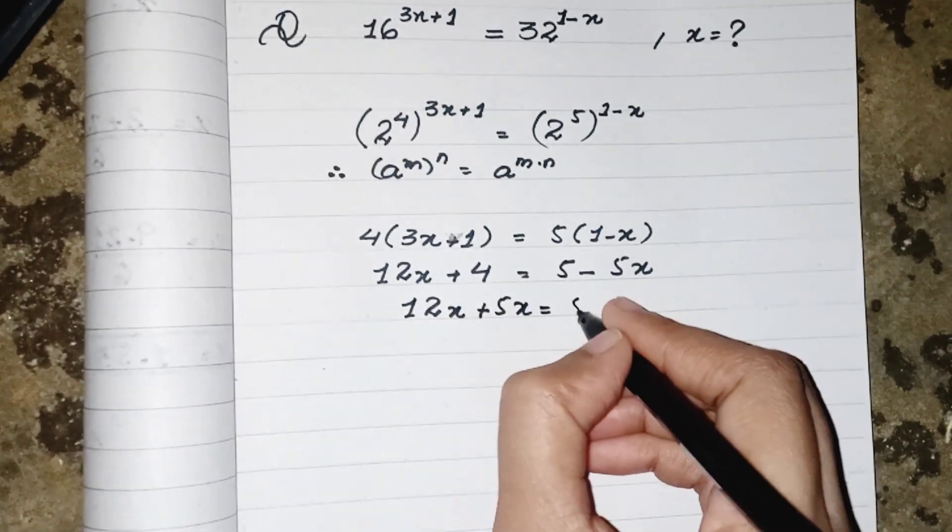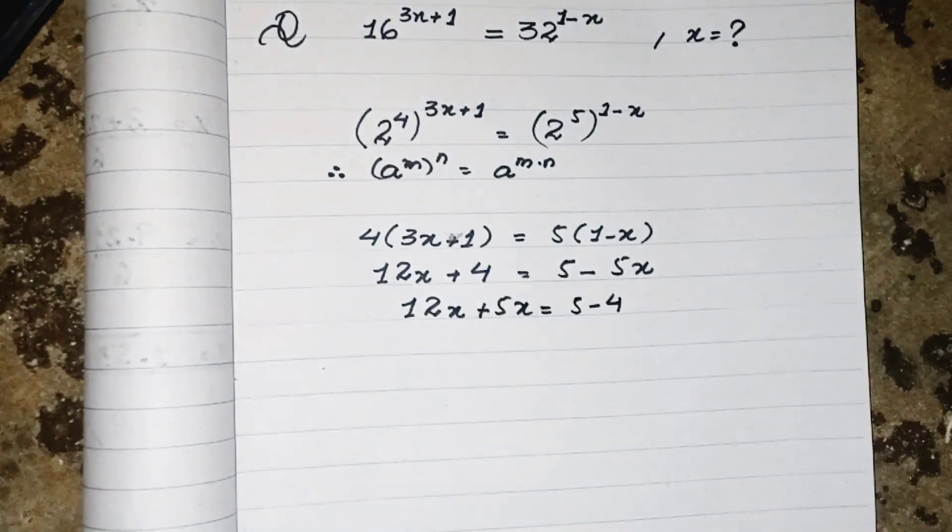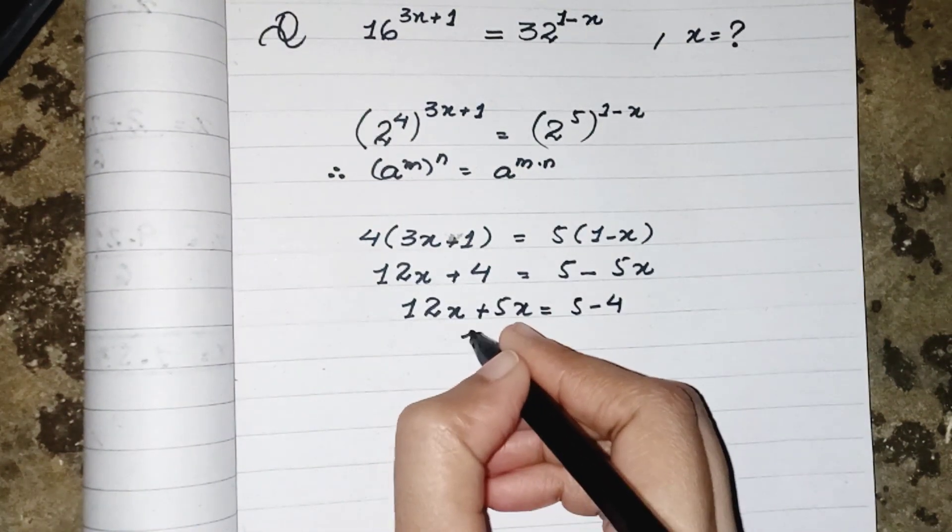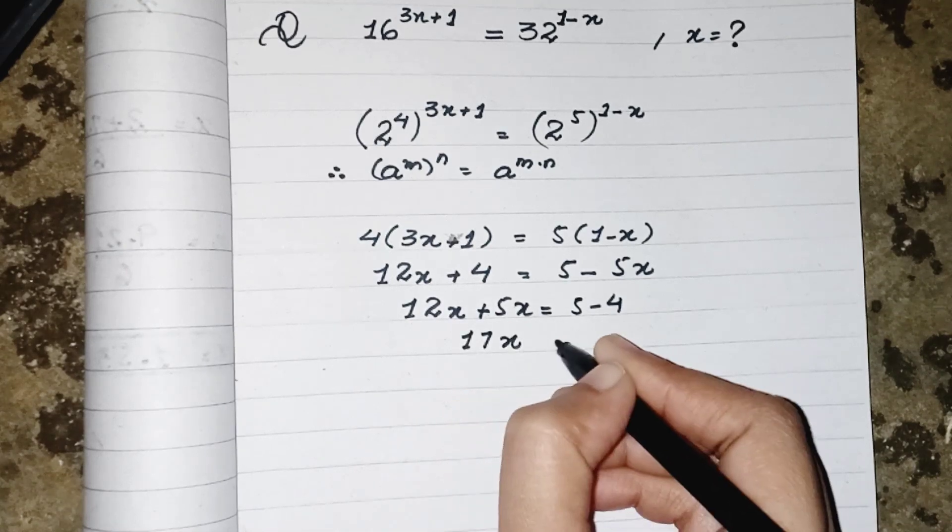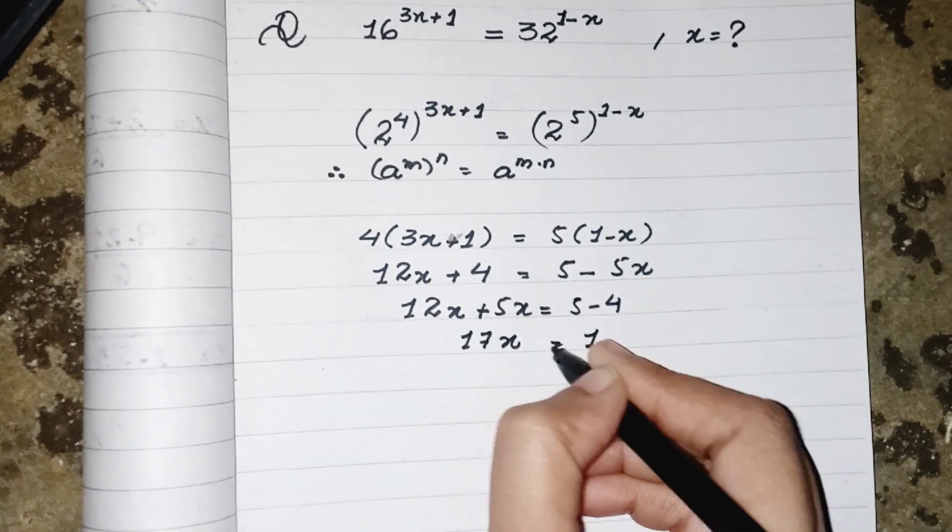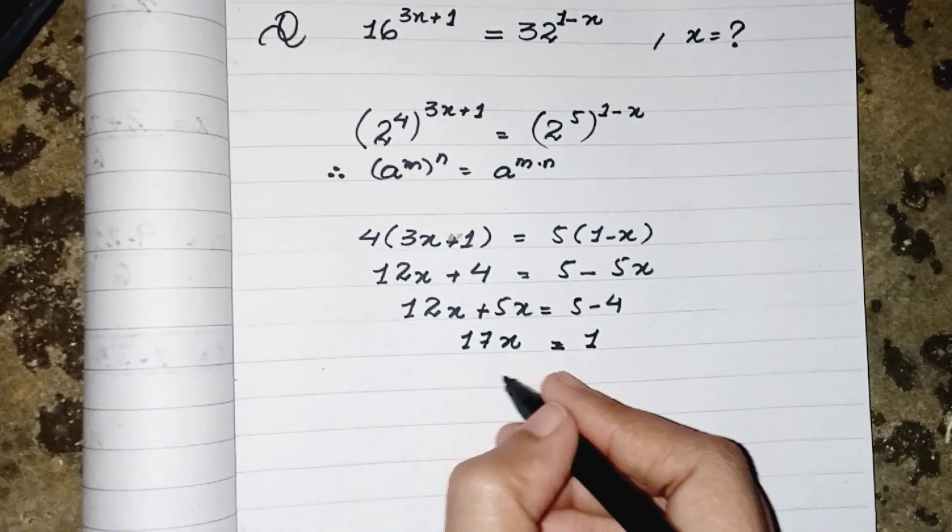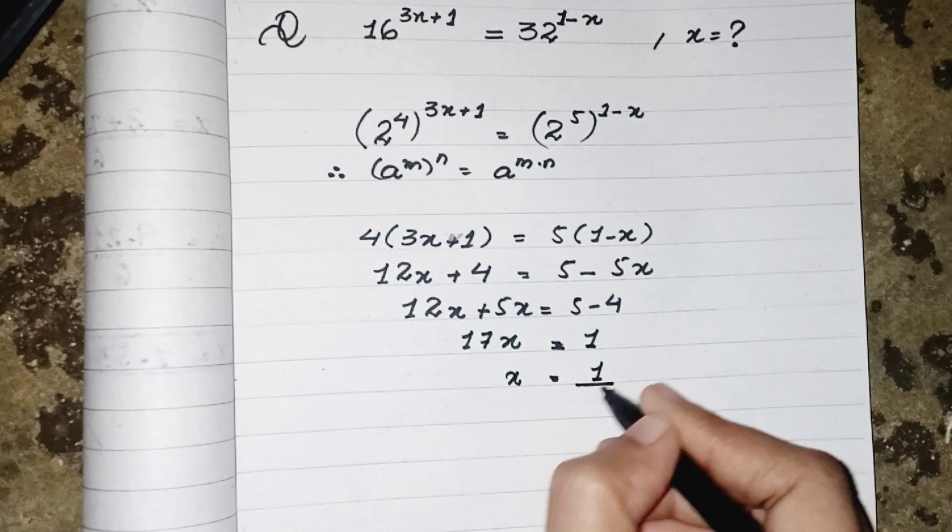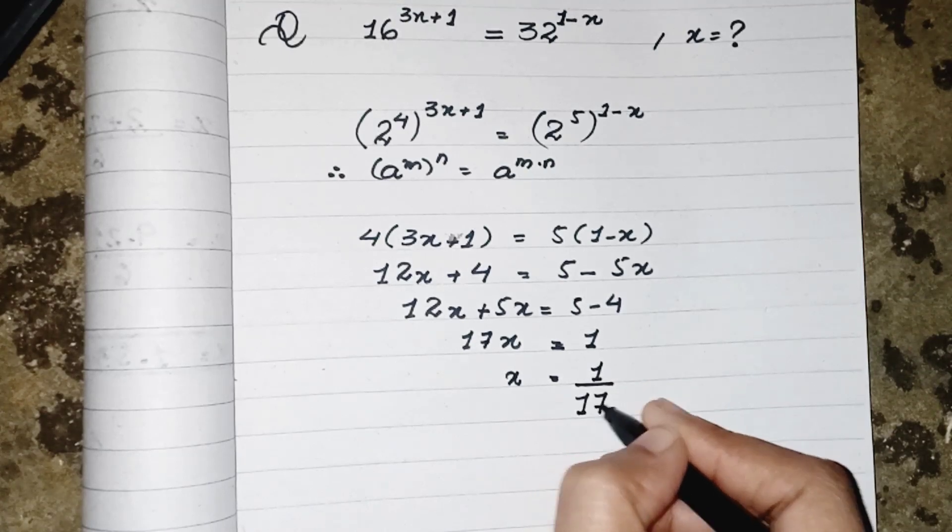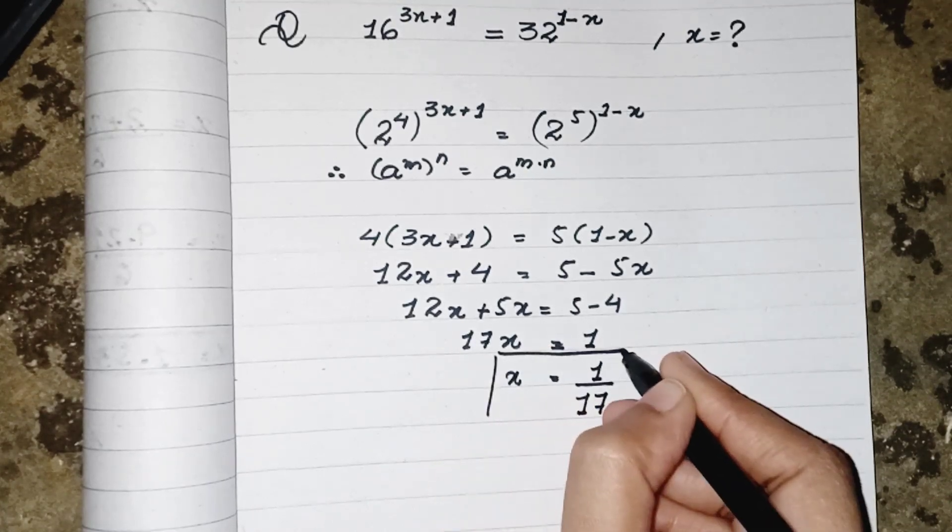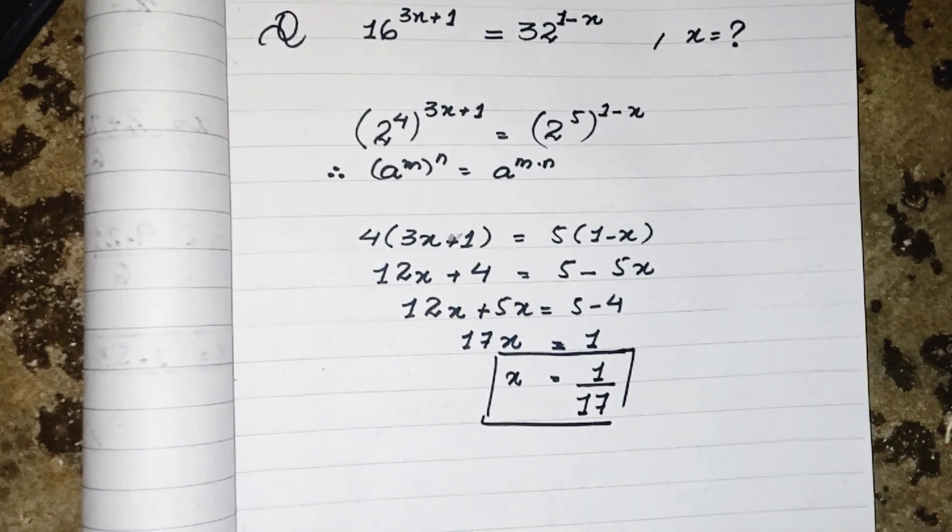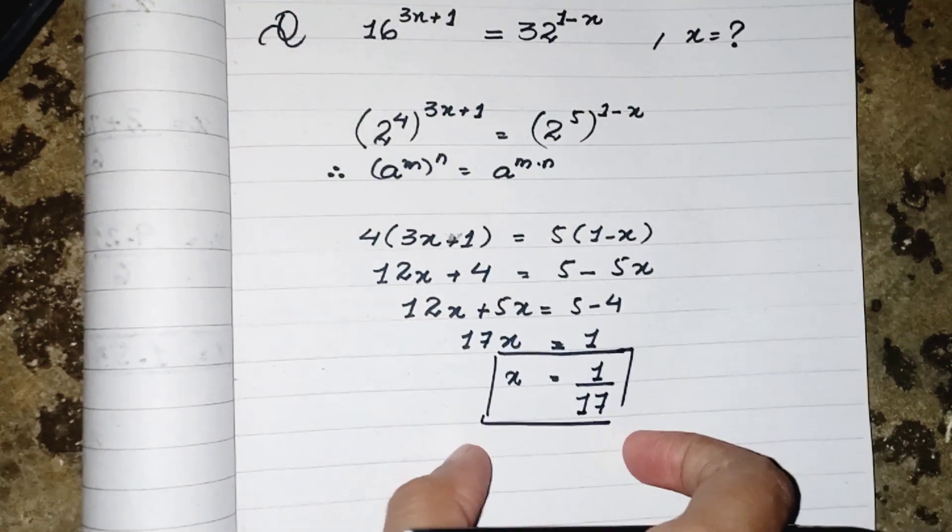And 5 minus 4 on the other side. 12 plus 5 is 17x equals to 1. So we have to find the value of x, so 17 will go to opposite side of the equals. So our answer is the value of x is 1 upon 17.